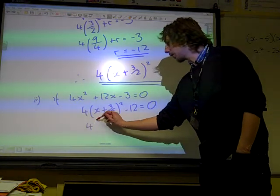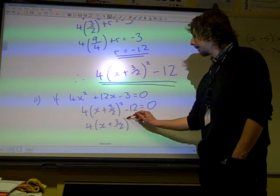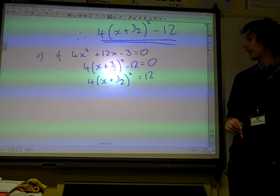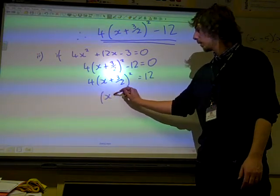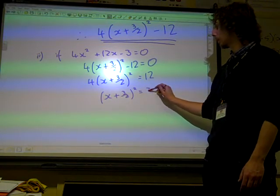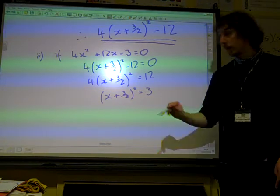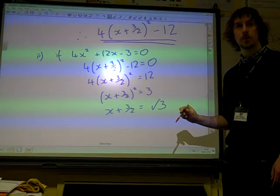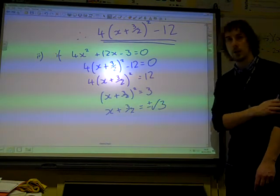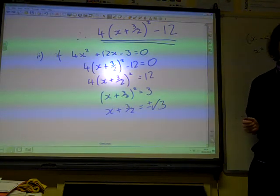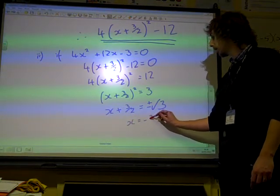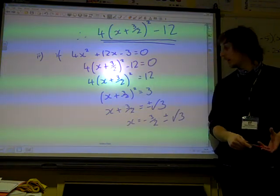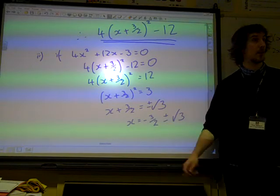So if we rearrange this, we've got 4 lots of x plus 3 over 2 squared equals 12. We're going to carefully pick this until we get what x is. We're going to divide by 4 first, then we're going to square root. What have I forgotten? It has to be plus or minus. And then we're going to take the plus 3 over 2 to the other side. You can test this. If you put that straight into the quadratic formula, you would end up simplifying it down to look exactly the same as that.